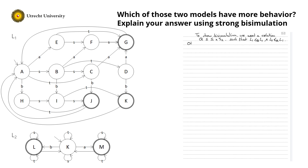First observe that if I do an action in L2 — so if I start in K and I execute an S, a T, an S, a T, an S and a T — so three times ST — I end up in state K. But if I look in L1, then this is not possible. Hence I know that L2 cannot be strongly simulated by L1. Okay, that's observation 1.